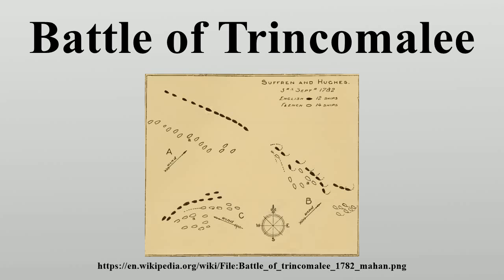He arrived in February 1782 and immediately engaged the British fleet of Vice Admiral Sir Edward Hughes in the inconclusive Battle of Sadras. After both fleets spent time in port repairing, refitting, and revitalizing, they met again in the April Battle of Providien, south of the Ceylonese port of Trincomale, that was ended by a storm and then nightfall. Hughes put into Trincomale, a formerly Dutch port the British had captured in January, for repairs, while Suffren went to the Dutch-controlled port of Batticaloa. Suffren and Hughes then met a third time off Negapatam, again with inconclusive results, after which Suffren anchored off Cuddalore to make repairs.